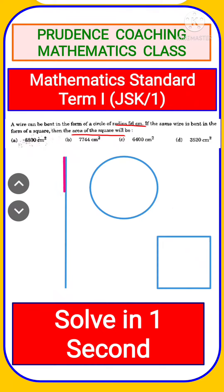As you can see, this is the wire. With this wire, we are making the circle. That means the circumference of this circle will be the same as the perimeter of this square, as the square is also made up of the same wire.